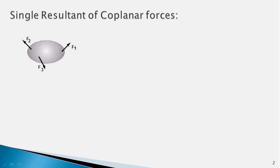Welcome back. In this video I am going to show you how to find a single resultant force of a general system of coplanar forces. In this figure you see a system of non-concurrent coplanar forces acting on a rigid body. As you already know, this system of forces can be reduced to a force-couple system acting at any specified point.